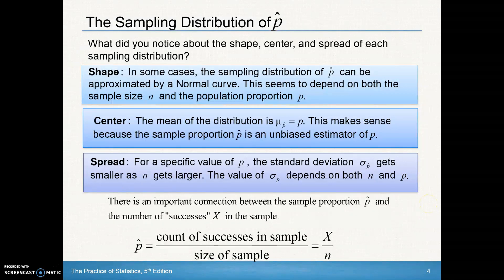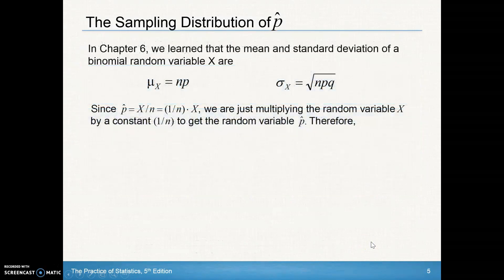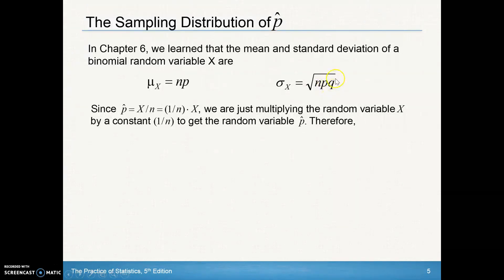There's an important connection between the sample proportion p-hat and the number of successes x in the sample. P-hat is simply the count of successes x divided by the sample size n — like counting red chips out of the total. From Chapter 6, we know that for a binomial random variable, the mean is n times p, and the standard deviation is the square root of n times p times q, where q equals 1 minus p.